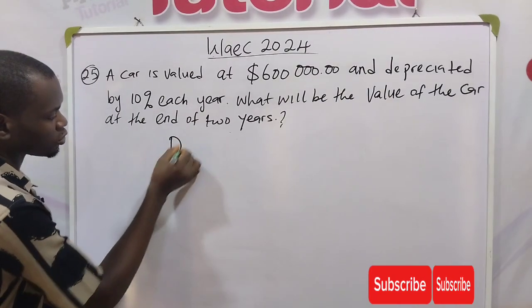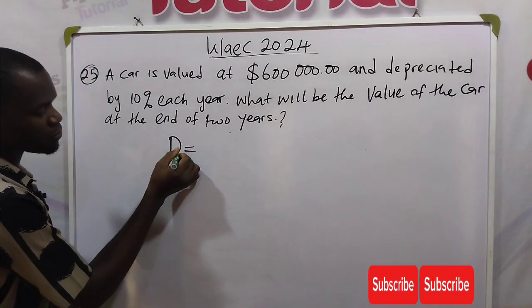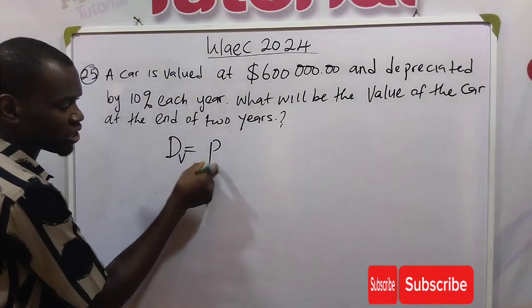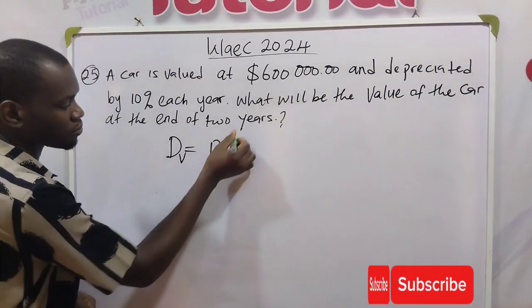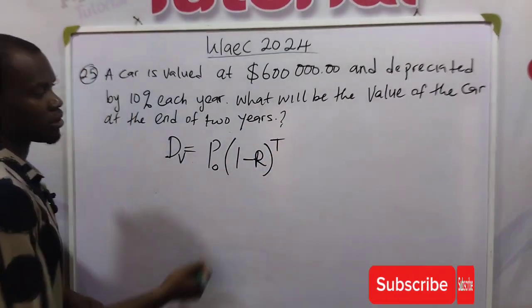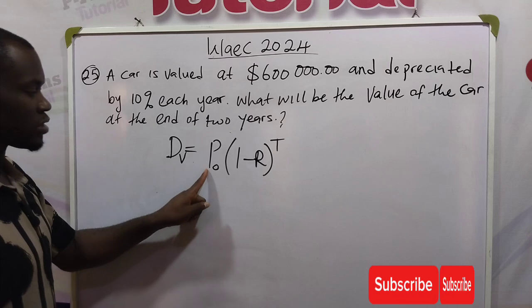Now I'll be making use of the depreciation formula to solve it. The depreciated value of the car will be the initial value times one minus the rate raised to the power of t. T is the time, this is initial value, this is the rate.